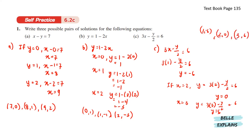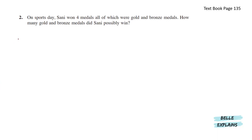Moving on to number 2. On sports day, Sunny won 4 medals, all of which were gold and bronze medals. How many gold and bronze medals did Sunny possibly win? Let's list down the possibilities. Here we have 3 gold plus 1 bronze, 2 gold plus 2 bronze, and 1 gold plus 3 bronze.